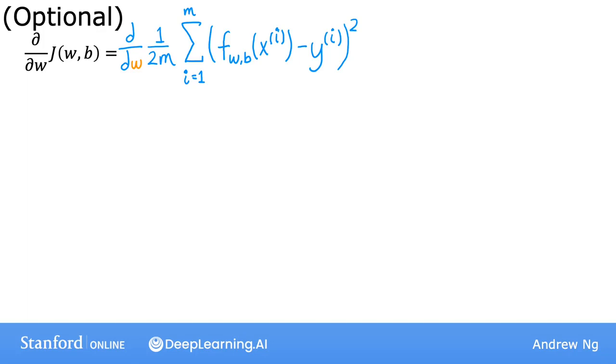And now remember also that f of wb of xi is equal to this term over here, which is wxi plus b. And so what we would like to do is compute the derivative, also called the partial derivative, with respect to w of this equation right here on the right. If you've taken a calculus class before, and again it's totally fine if you haven't, you may know that by the rules of calculus, the derivative is equal to this term over here.